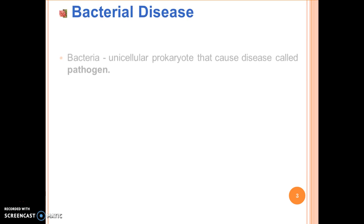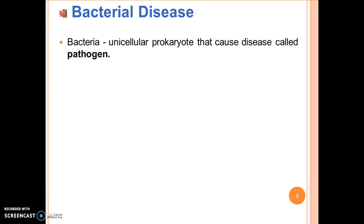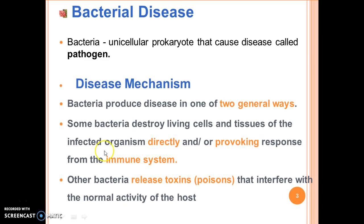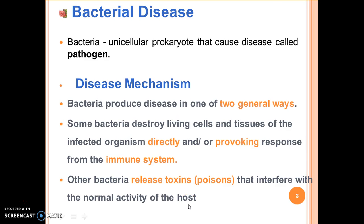What is bacterial disease? Bacteria is a unicellular prokaryote that causes disease — called a pathogen. Disease mechanisms are: first, some bacteria destroy living cells and tissues of the infected organism directly, and/or by provoking a response from the immune system; and other bacteria release toxins — called poisons — that interfere with the normal activity of the host.